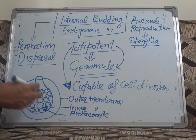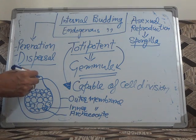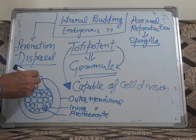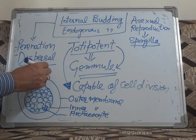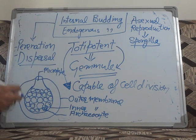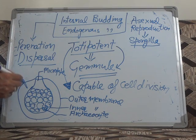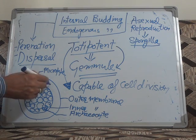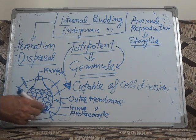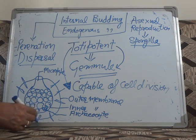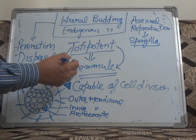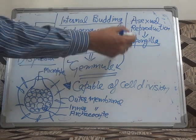These totipotent cells, on the onset of favorable conditions, will come out from the body through a pore known as the Micropyle. The outer membrane may also have spicules — these are small fiber-like structures which may be present on the gemmule. This is the complete structure of the gemmule in Spongilla.